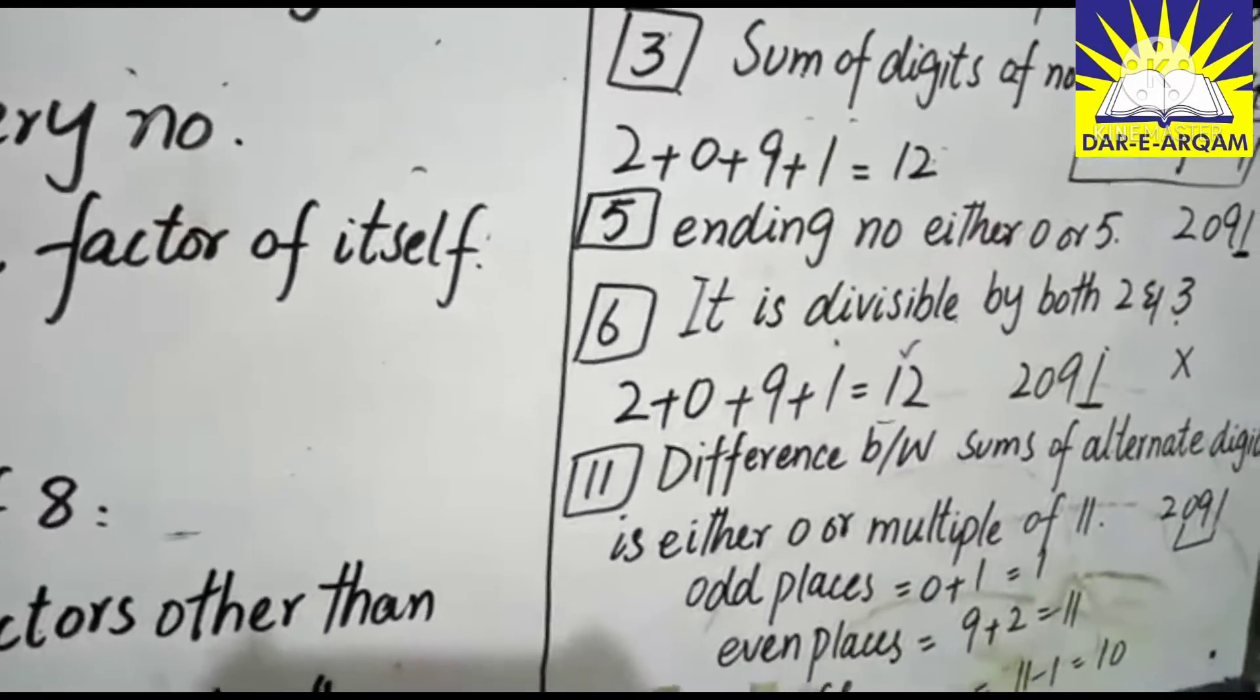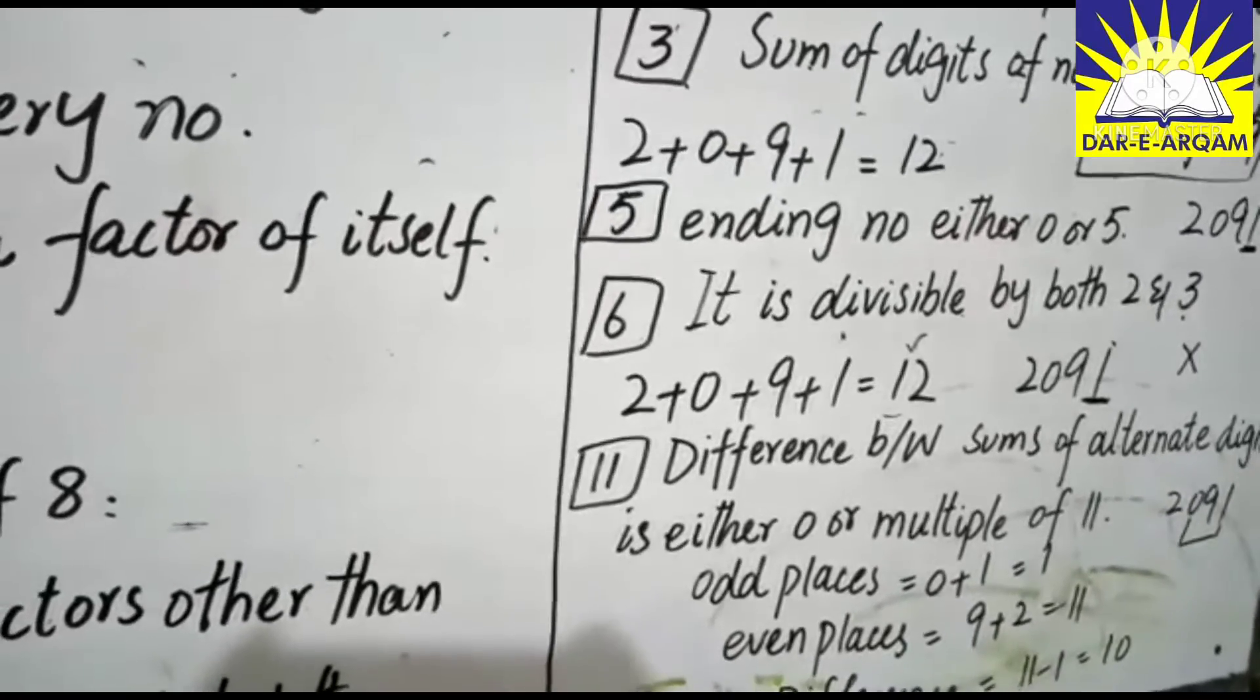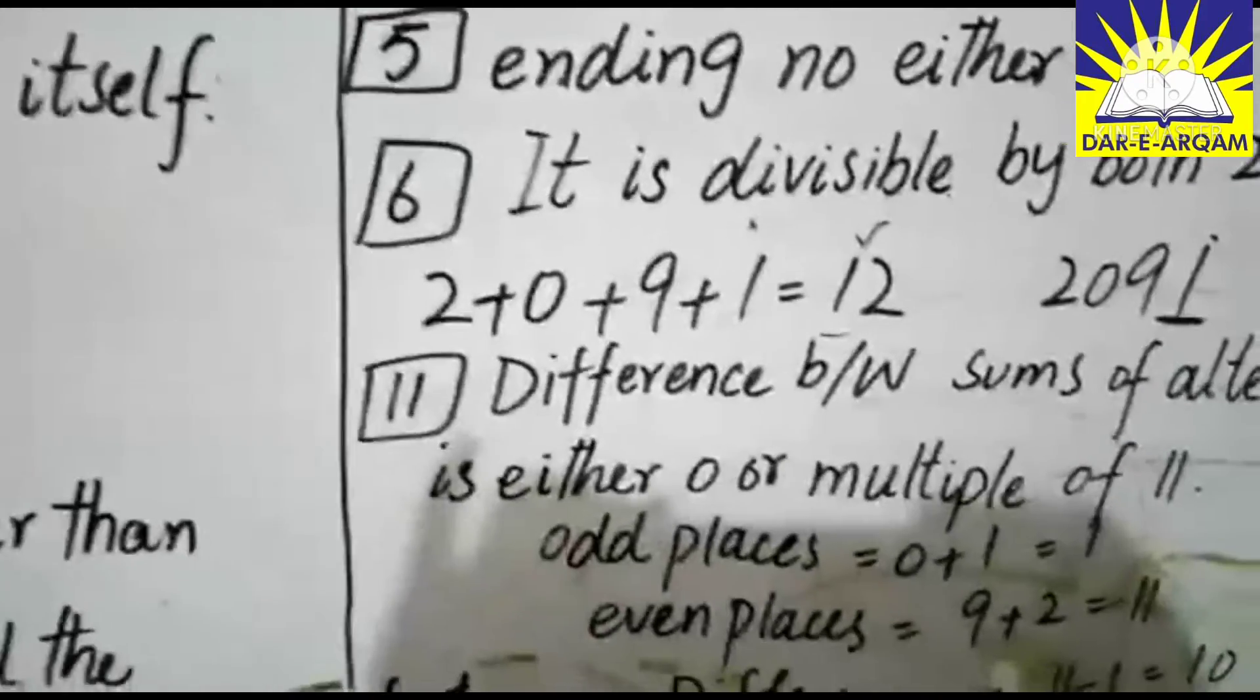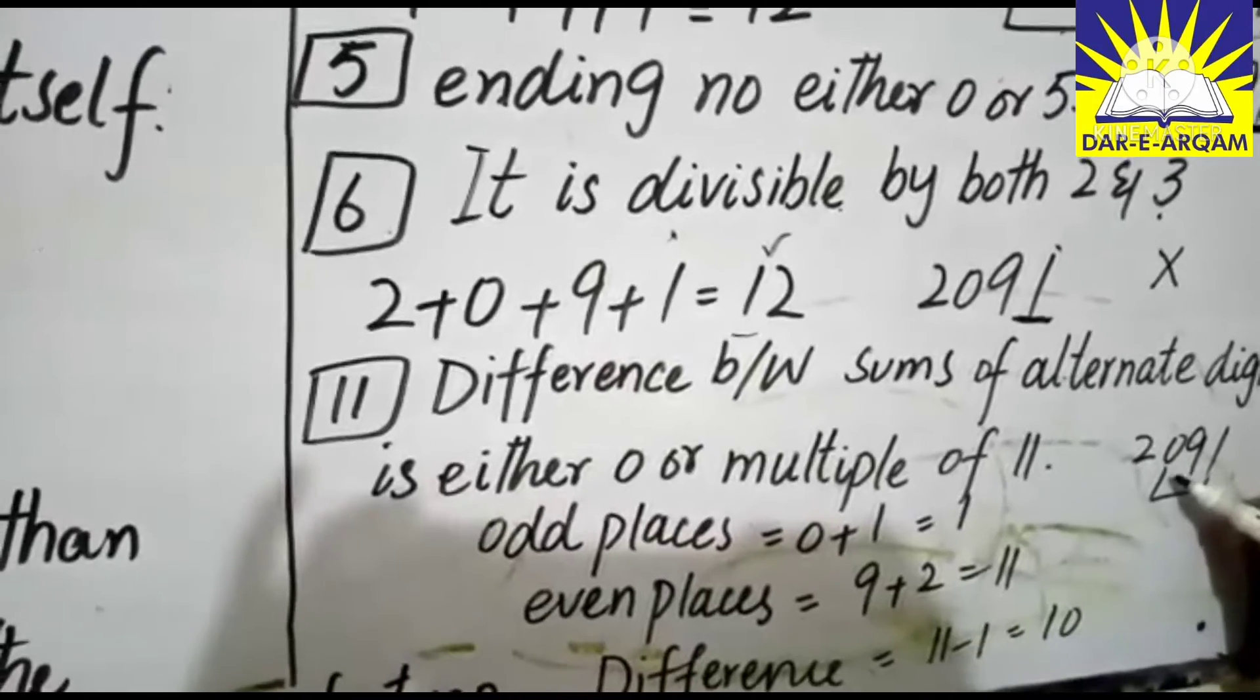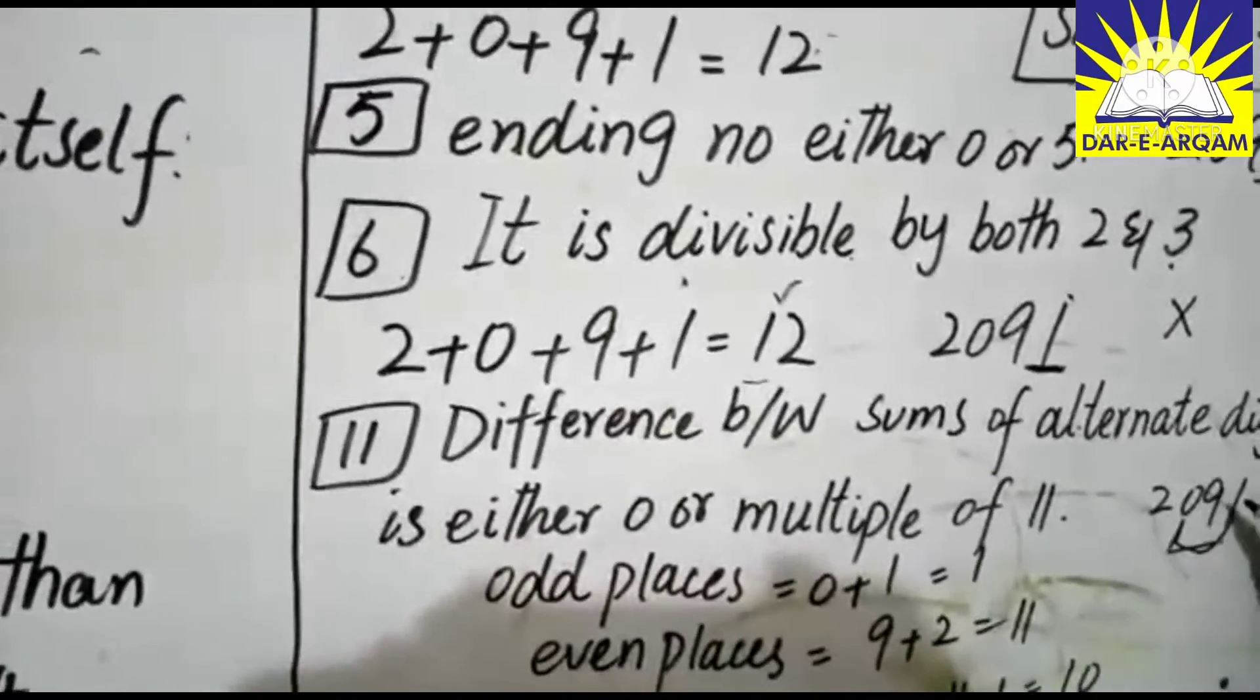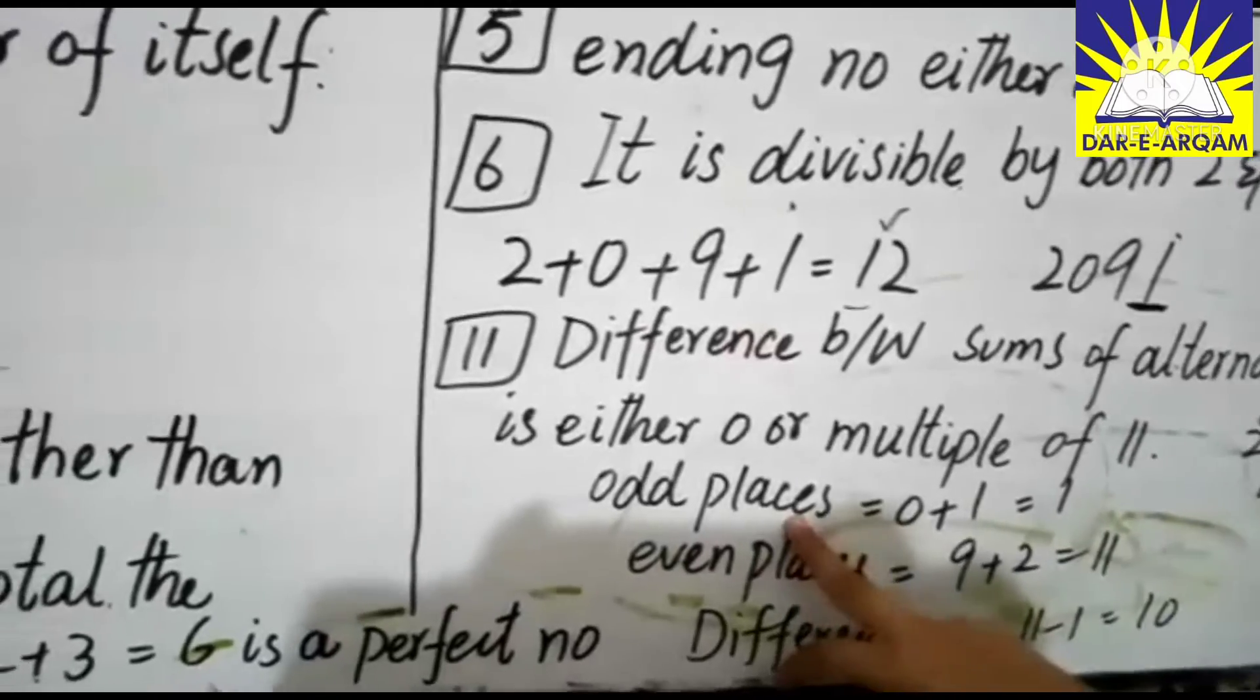For divisibility by 11, we check odd places and even places. Odd places are 0 and 1, even places are 9 and 2. Sum them up.